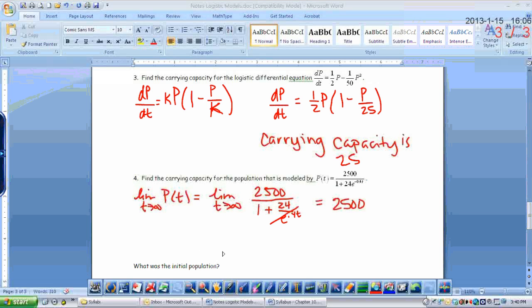Alright. And then one other thing on number 4 is what was the initial population? Well, the initial population is at time equals 0. So I would be trying to find p of 0. So p of 0 just means that I'm plugging a 0 in for t. So 2,500 over 1 plus 24 times e to the 0 power. Well, anything to the 0 power is 1. So I have 2,500 divided by 1 plus 24 or 25 and that equals 100. So that's just kind of a review problem, even back from algebra 2. But I just kind of wanted to throw that in.